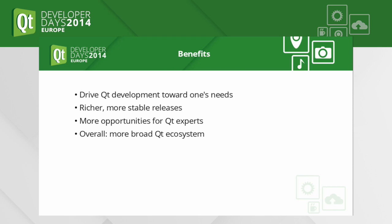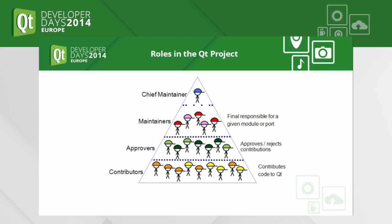I took this diagram from the original announcement. It's a schematic of the various roles inside the Qt project — there are actually five roles. At the bottom of the pyramid are ordinary users: developers who use Qt but don't contribute code, don't write bug reports, and don't do anything about the product itself.